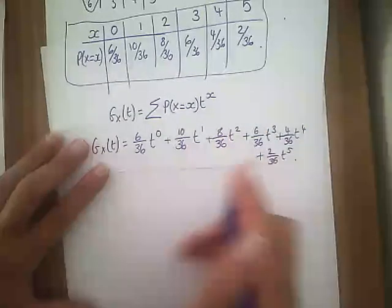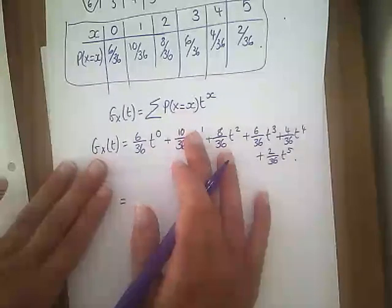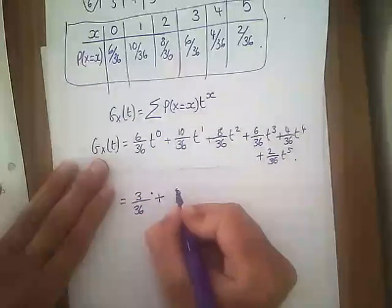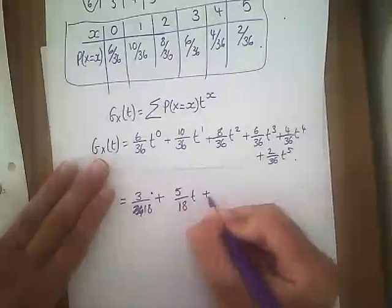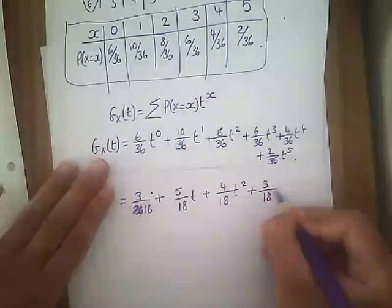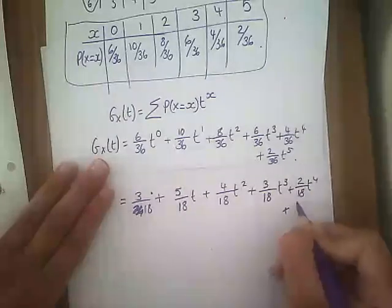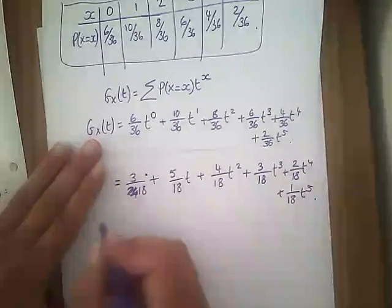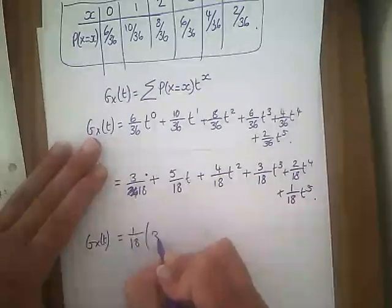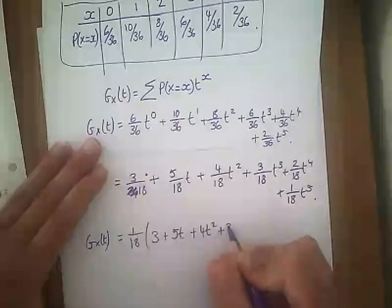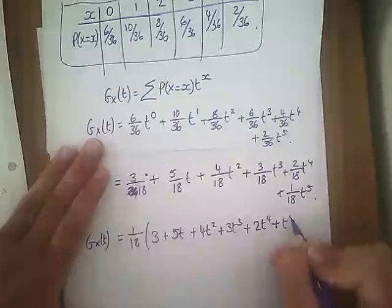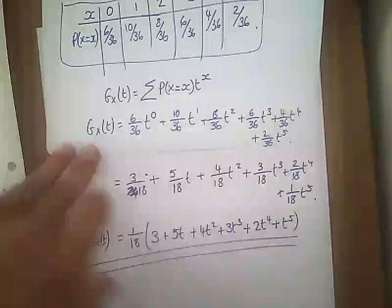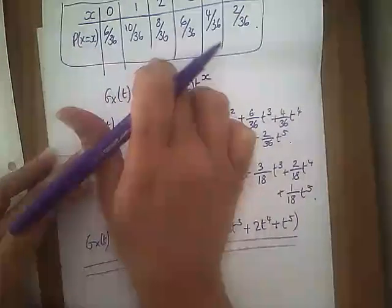Then we simplify. Taking out a factor of 1/18, the probability generating function becomes (1/18)(3 + 5t + 4t² + 3t³ + 2t⁴ + t⁵). That is our probability generating function. It gives us a series function that represents the table — that is the point of a probability generating function. You should be able to go from that PGF back to the table just as easily.